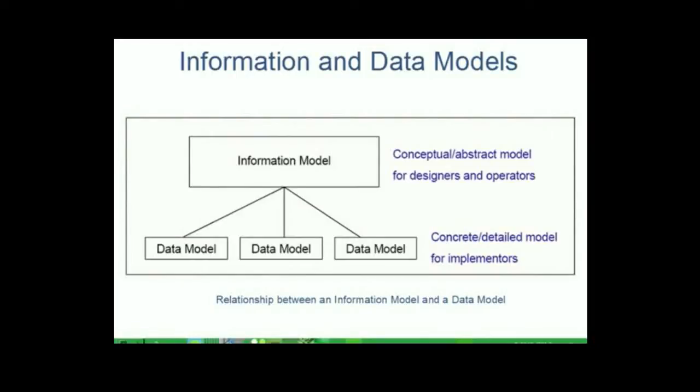An information model is an abstract formal representation of entities that includes their properties, relationships and the operations that can be performed on them. The main purpose of an information model is to model managed objects at a conceptual level independent of any specific implementations or protocols used to transport the data.